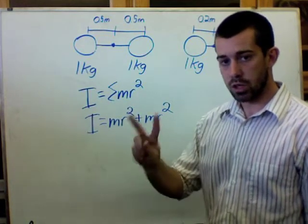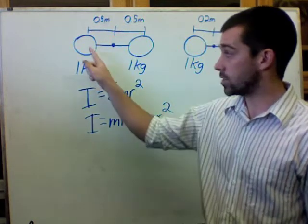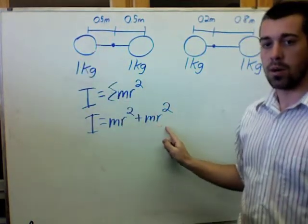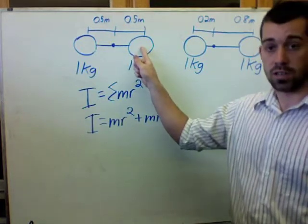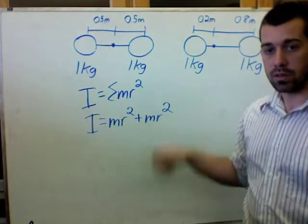So in this case, we have two masses. So I'll use MR squared to find the rotational inertia of this one and I'll use MR squared to find the rotational inertia of that one and then add them up. So this is what I will use for both problems.